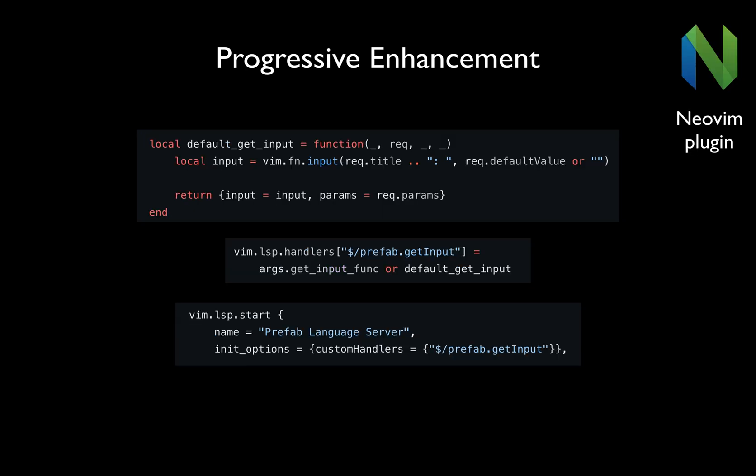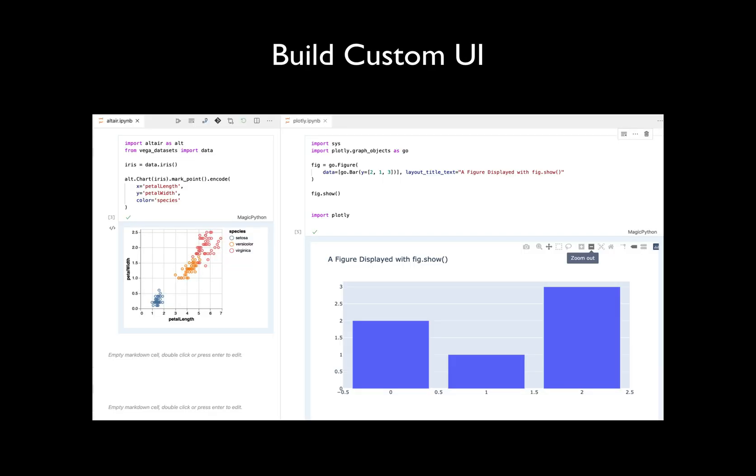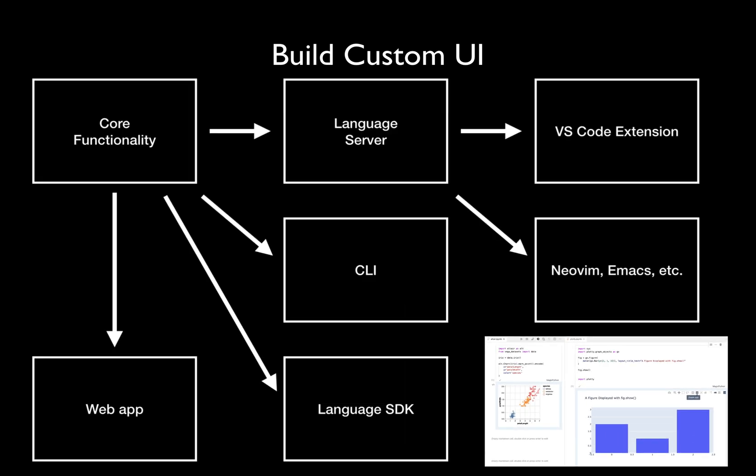You can build as much per-editor specific UI and functionality as you want in the glue code, but you should always push as much functionality as possible as far up the chain as is reasonable, so that more tools benefit. Language servers are incredibly powerful, and they're not just for languages. The LSP gives us an amazing baseline to build upon, and we can always add in whatever custom functionality we need to make it even better. In my next video, I'll be creating a language server from scratch to show you how easy it is to get going. Hit the subscribe button to stay in the loop, and if you liked this video, give it a like.